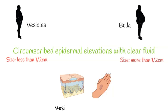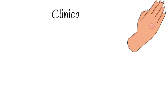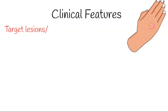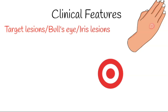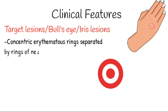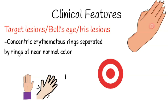Coming back to erythema multiforme, the classic skin lesions seen here are the target lesions or bull's eye lesions. These are concentric erythematous rings separated by rings of near-normal color, mostly seen on the hands, wrists, and ankles.